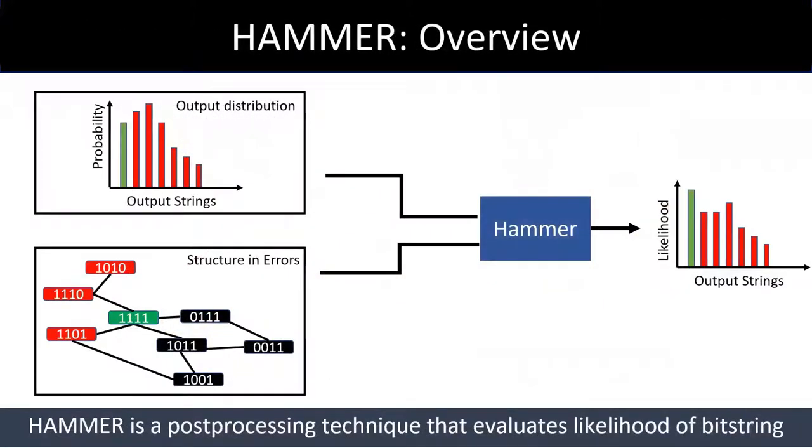To leverage the structure in errors, we propose HAMMER, which is a post-processing technique that we can run on the output distribution of a quantum circuit. What HAMMER does is rather than just relying on the probability of each outcome, it also looks at the neighborhood of each output string in the hamming space. Using this analysis, HAMMER captures how dominant are the neighbors of an outcome in the output distribution and estimates the likelihood of each outcome being correct.